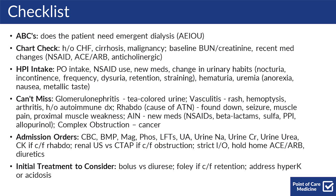AIN — ask about new meds including NSAIDs, beta-lactams, sulfa antibiotics, PPIs, or allopurinol — as well as complex obstruction, which is usually due to cancer.